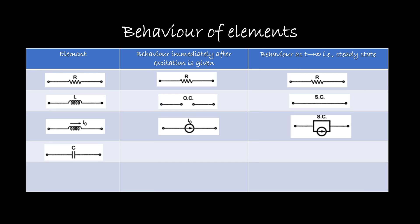The next element is the capacitor. What is the property of capacitor? The capacitor does not allow sudden changes in voltage, which is quite the reverse compared to the inductor. Where the inductor behaves like an open circuit, the capacitor will behave like a short circuit — the logic being that capacitor does not allow sudden changes in voltage, meaning V equals 0, so it is replaced by a short circuit. After an infinite period of time, when it reaches steady state, it will allow the voltage and behave like an open circuit.